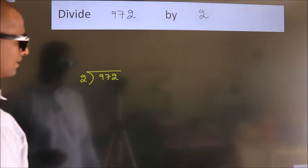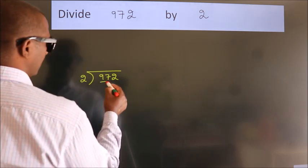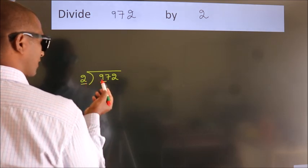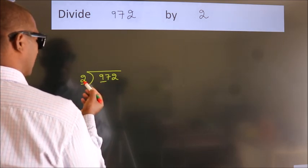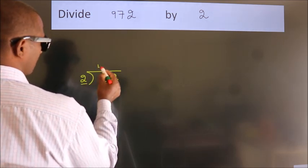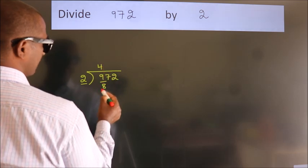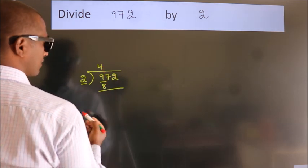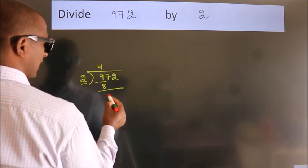Next. Here we have 9, here 2. A number close to 9 in 2 table is 2 times 4 equals 8. Now we should subtract. We get 1.